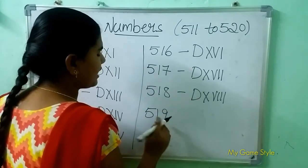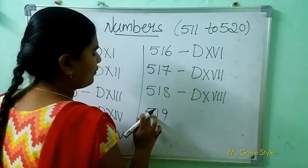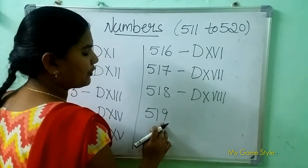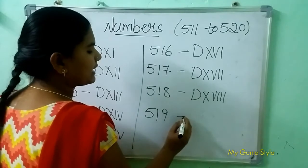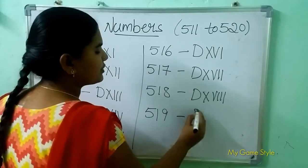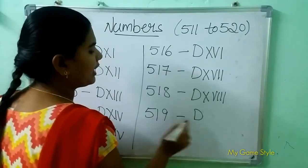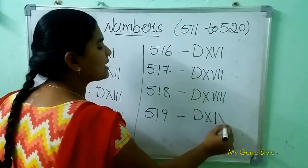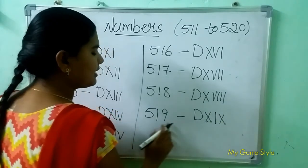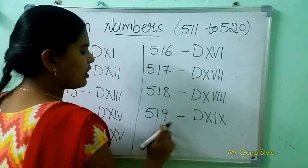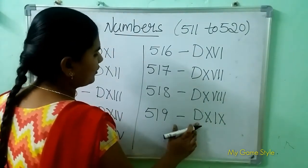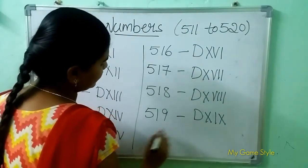519. 519 is 519. D is 500. XIX is 19. So it means 519.